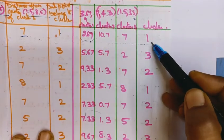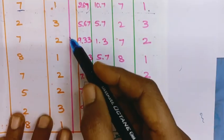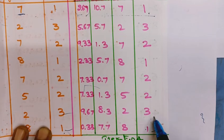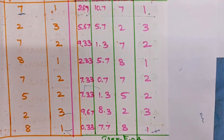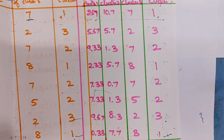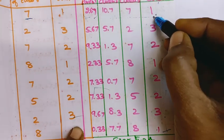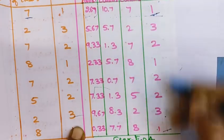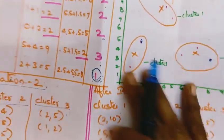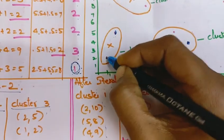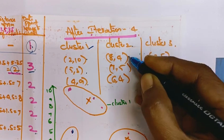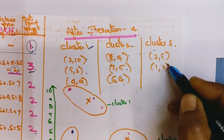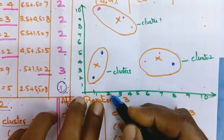After calculating distances in iteration 4, compare the cluster assignments with iteration 3. Whenever the cluster assignments in the previous iteration and the next iteration are the same, you can stop the procedure. The cluster assignments in iterations 3 and 4 are the same, so we stop here.